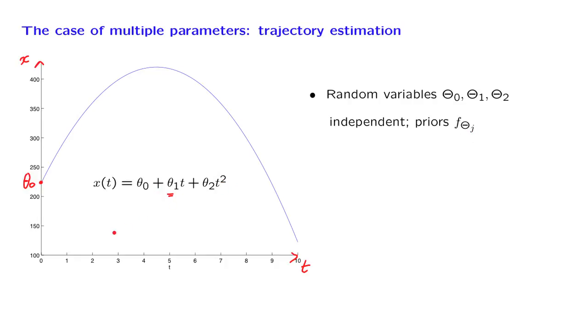Then what is going to happen is that you're going to observe the trajectory at certain points in time. For example, at a certain time t1, you make a measurement, but your measurement is not exact, it is noisy, and you record a certain value. At another time, you make another measurement, and you record another value. At another time, you make another measurement, and you record another value, and similarly, you get multiple measurements. On the basis of these measurements, you would like to estimate the parameters.